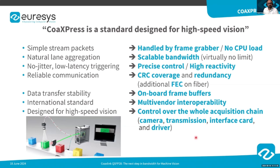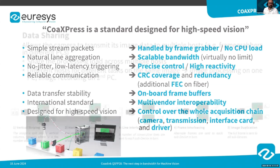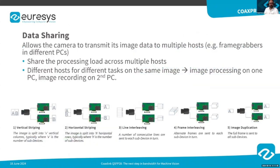CoaXPress is designed for high-speed vision, so the whole acquisition chain from camera to driver is fully controlled. CoaXPress natively supports data sharing, which allows the camera to distribute images to different PCs to increase the processing power of the system.